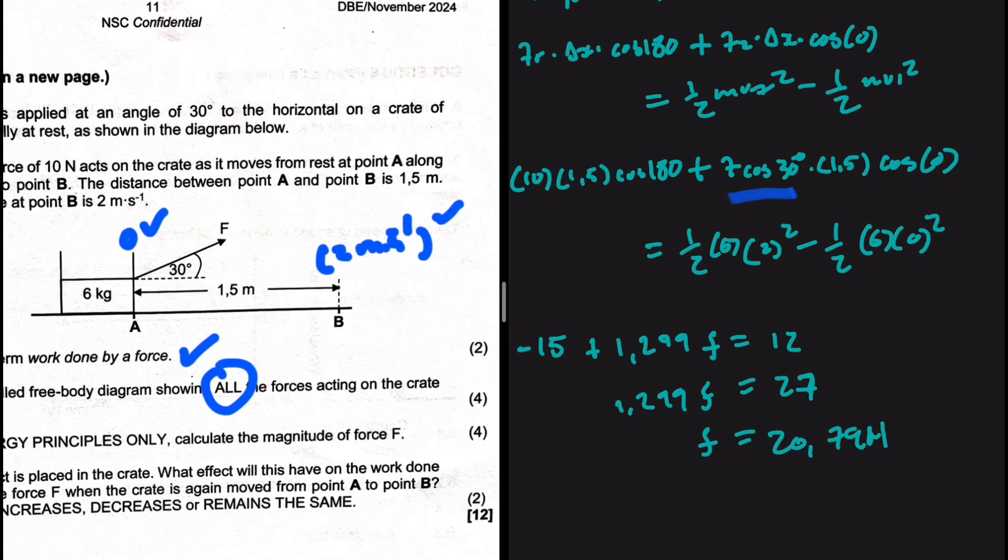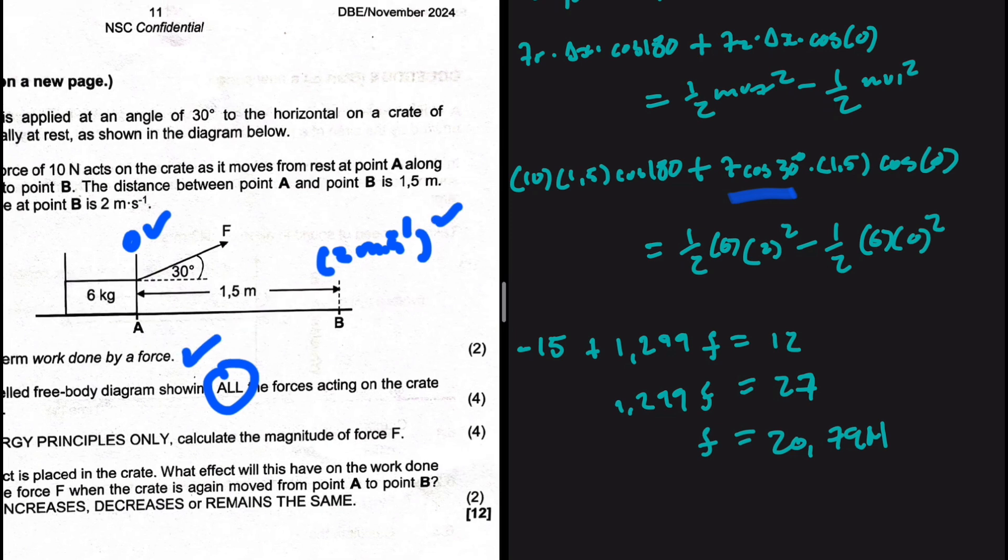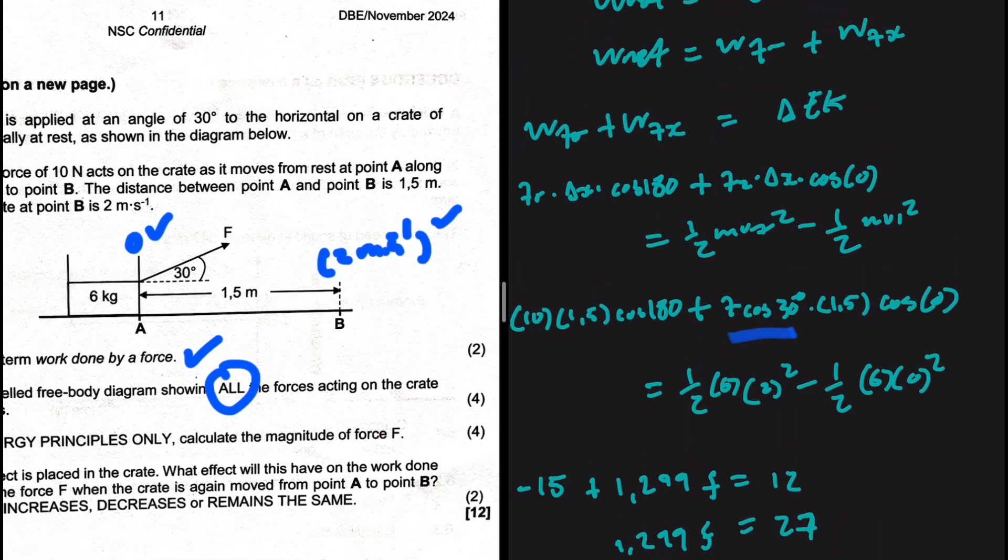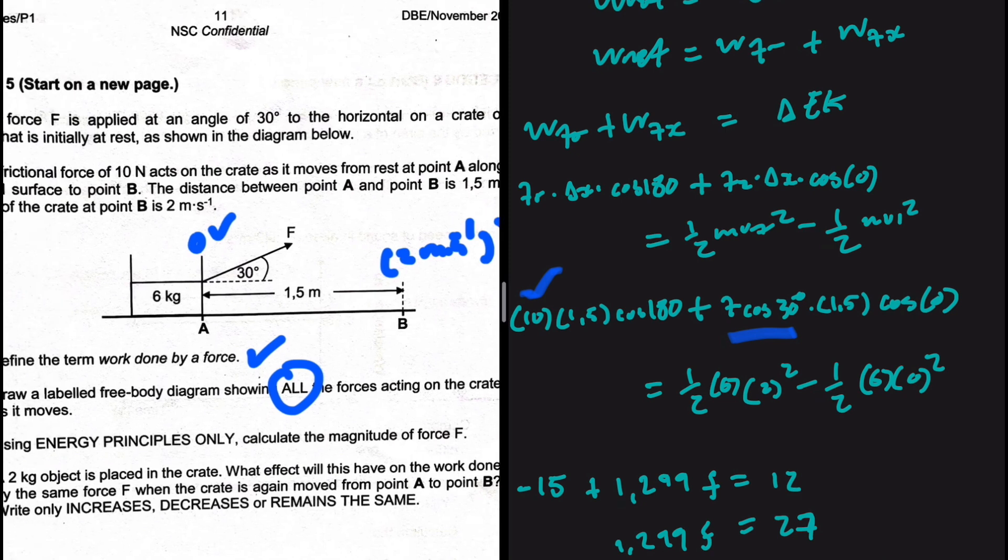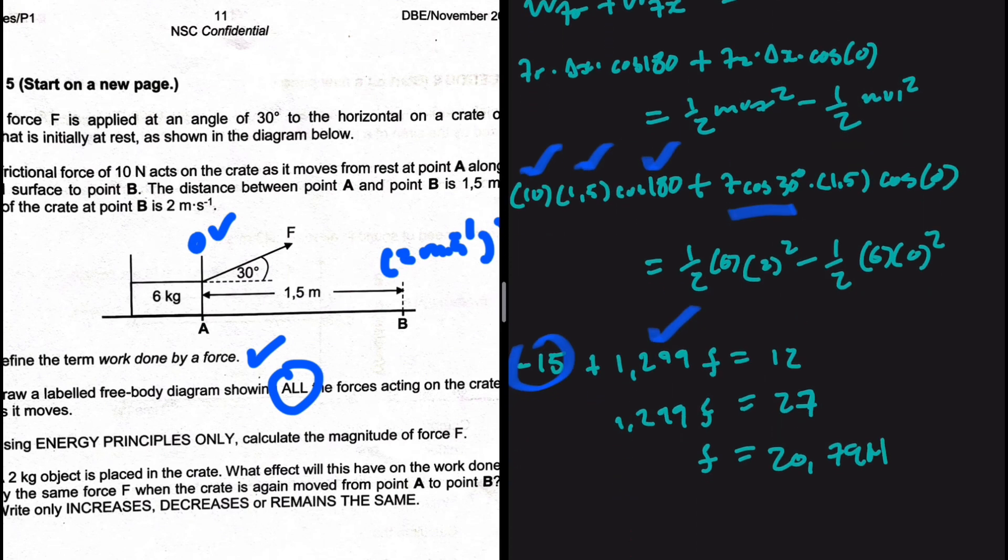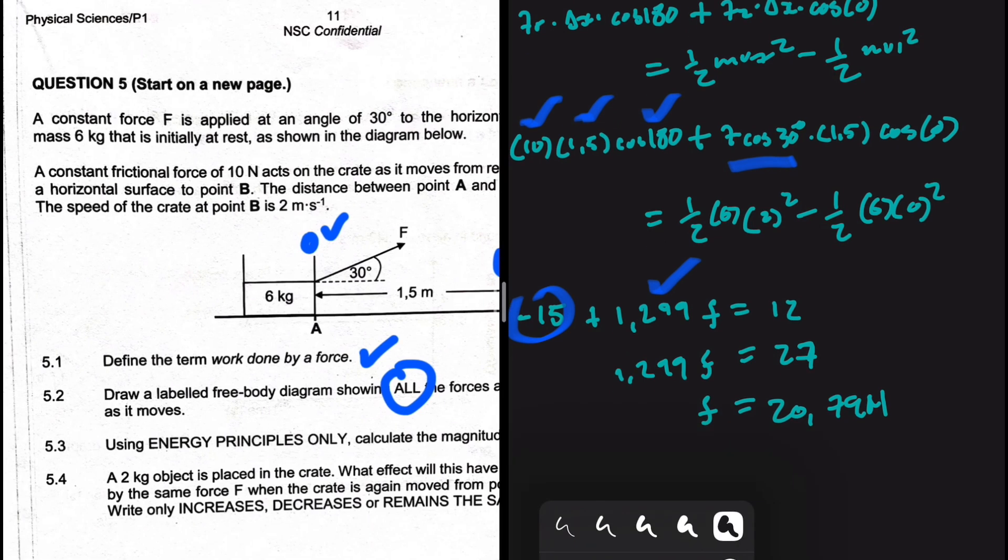So F is 20.79 Newtons. We only need the magnitude. We don't need the direction. So that's it. So let's just verify and see if what we did is correct. This is the constant frictional force. This is the displacement. Cos of 180 minus 15. Seems good. Cos of 30. Maybe I can just substitute that. Cos 30 multiplied by 1.5. That is 1.299. So I'm happy with this. And then 6 divided by 2. That is 3. Times 4. That is 12. 12 plus 15. Yeah. Seems good. So that is the applied force.